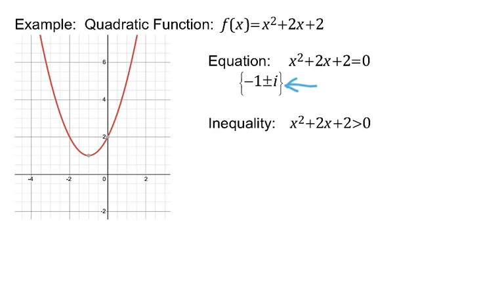Well, you can look at the picture and see, you can just look at the graph and see, if the solutions of the equation are not real numbers, if they're non-real complex numbers, that simply means the graph has no x-intercepts.